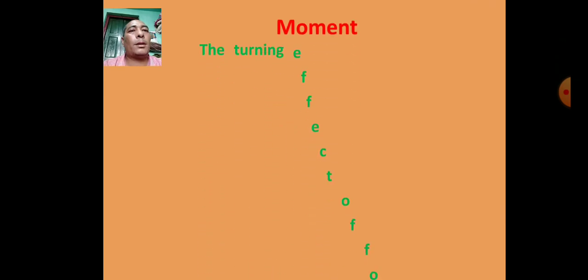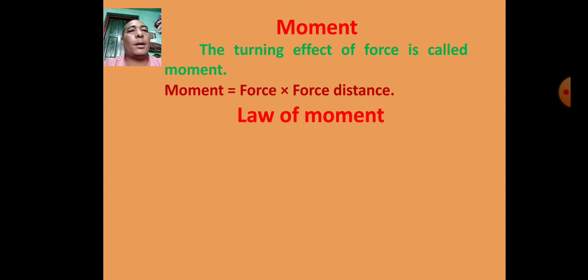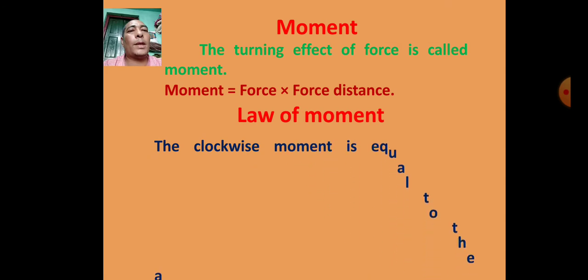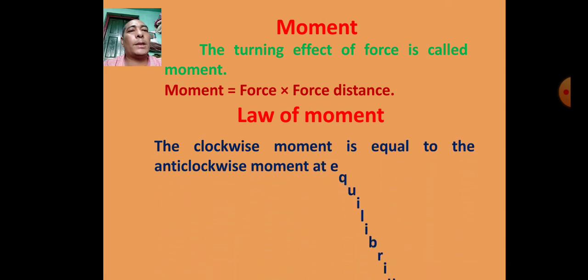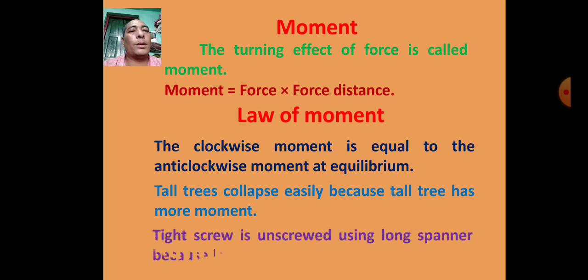The turning effect of force is called moment. Moment equals force into force distance. The law of moment states: the clockwise moment is equal to the anti-clockwise moment at equilibrium. Tall trees collapse easily because a tall tree has more moment. A tight screw is unscrewed using a long spanner because a long spanner has more moment.